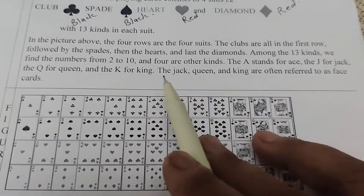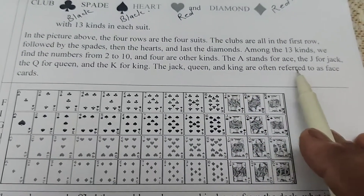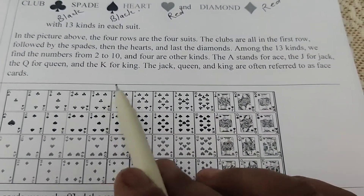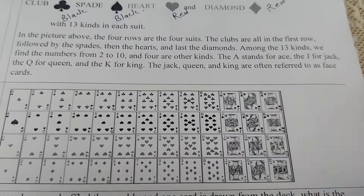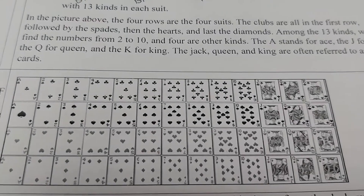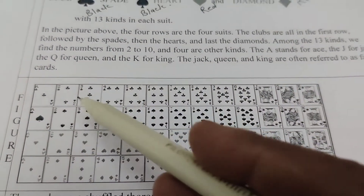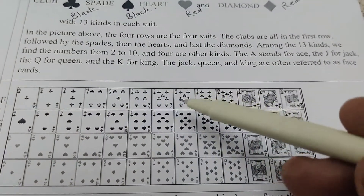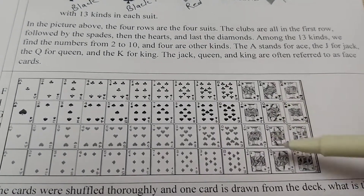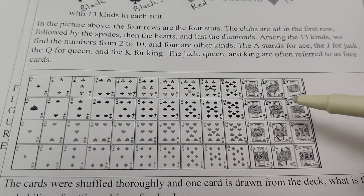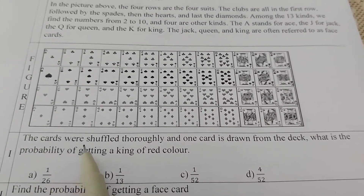Among the 13 kinds, we find the numbers from 2 to 10, and 4 other kinds: A for ace, J for jack, Q for queen, and K for king. The jack, queen, and king are often referred to as the face cards. So we have all four aces, then 2 through 10, and then jack, queen, and king as the face cards.